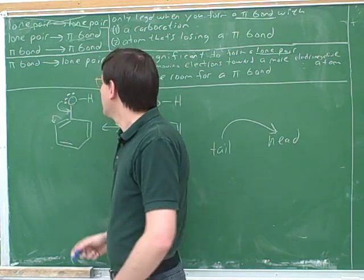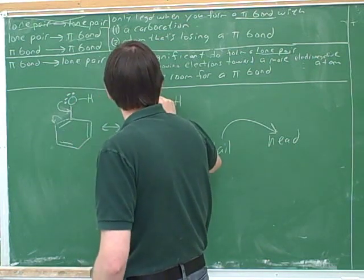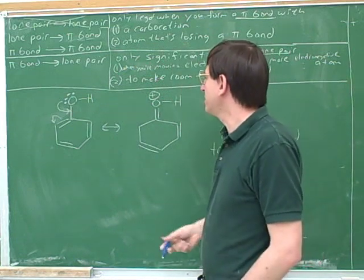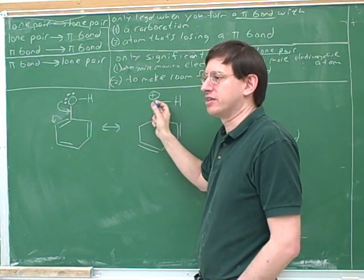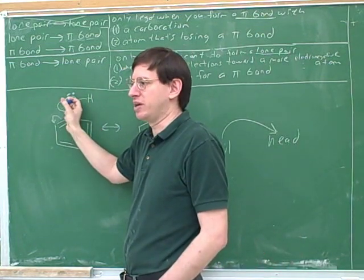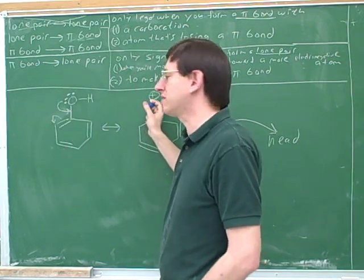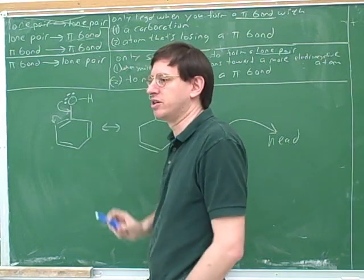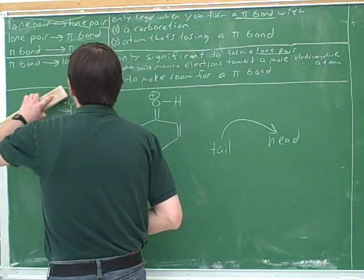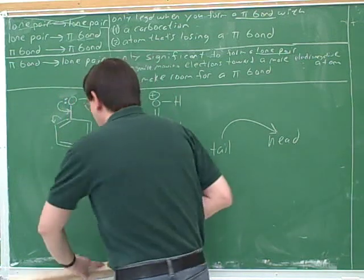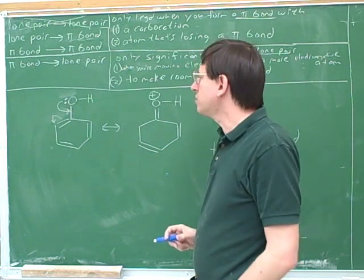This oxygen started neutral and it's losing electrons, so its charge must now be positive. The arrow tells us what the charge is going to be — we started neutral and we're losing electrons, so this must be positive. It's a waste of time to actually count the electrons to verify the formal charge. On most problems we wouldn't even have drawn this lone pair; we only draw the lone pair that's participating in the resonance.